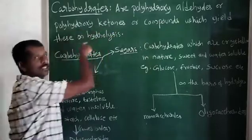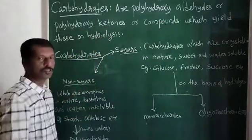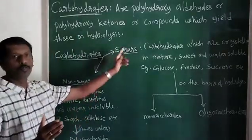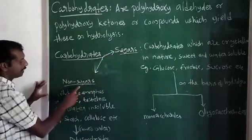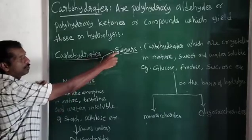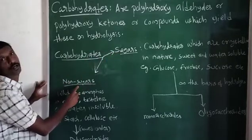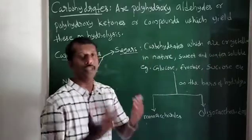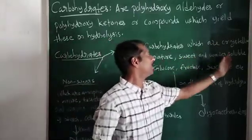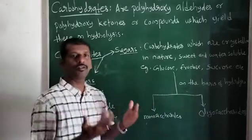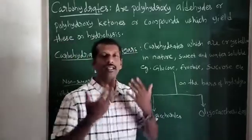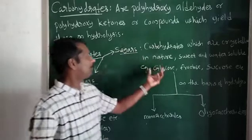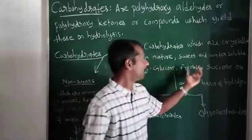Carbohydrates are classified into two types: sugars and non-sugars. Sugars are carbohydrates which are crystalline in nature, sweet, and water soluble. Examples of sugars include glucose, fructose, sucrose, etc.